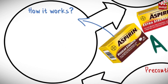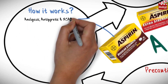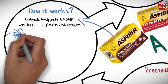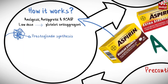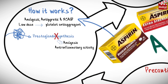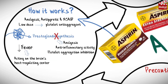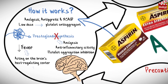Aspirin works as an analgesic, antipyretic, and non-steroidal anti-inflammatory drug. At low dose it works as a platelet anti-aggregant. Aspirin inhibits prostaglandin synthesis, resulting in analgesia, anti-inflammatory activity, and platelet aggregation inhibition. It also reduces fever by acting on the brain's heat regulating center to promote vasodilation and sweating.